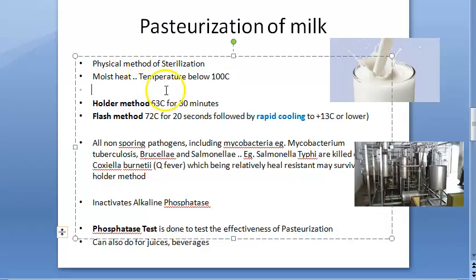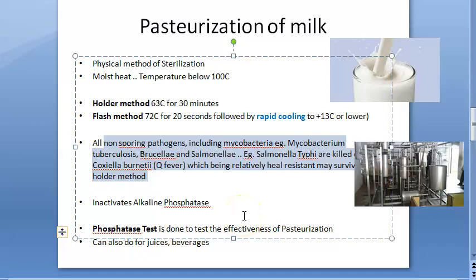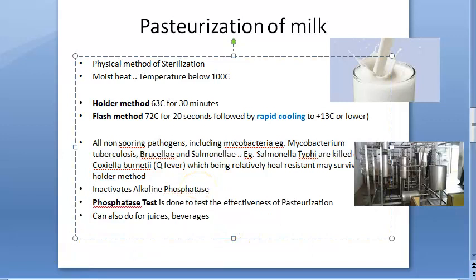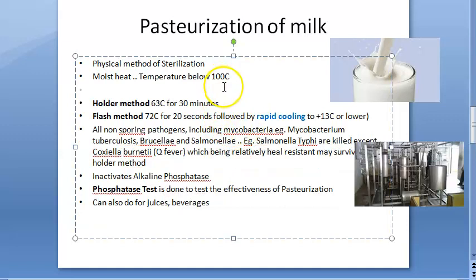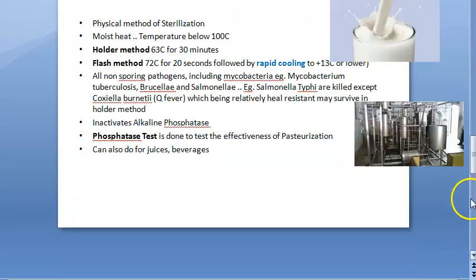Pasteurization of milk is a physical method using moist heat below 100 degrees centigrade. Holder method: 63 degrees centigrade for 30 minutes. Flash method: 72 degrees centigrade for 20 seconds with rapid cooling to 13 degrees centigrade or lower. Kills mycobacteria, Salmonella, and Brucella, but Coxiella burnetti requires the flash method. Alkaline phosphatase is inactivated and the phosphatase test checks effectiveness. This applies to juices, beverages, and beer as well.